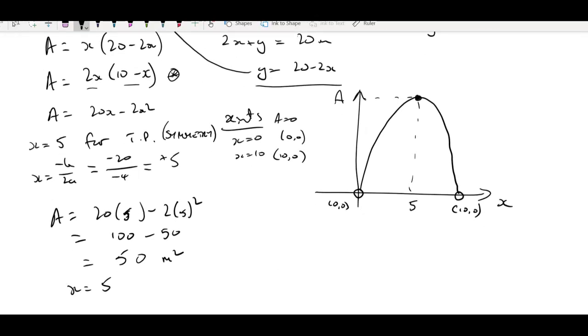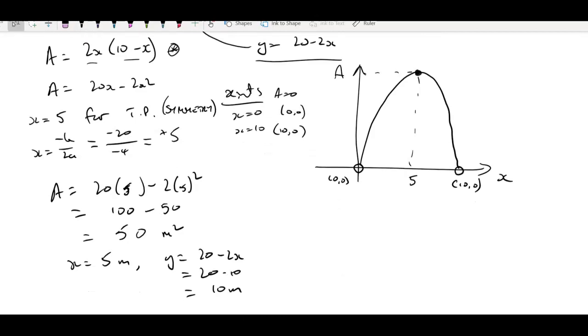What are the dimensions? Well X is 5 metres as we've already calculated, and Y from our formula is 20 minus 2X, which is 20 minus 10, which is 10 metres. Makes sense: 10 metres for the long side, 5 for the two short sides, total of 20. That problem is finished.